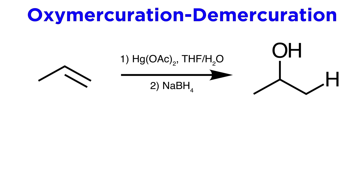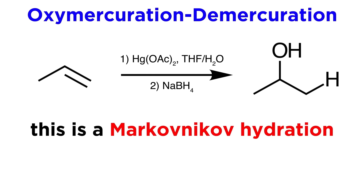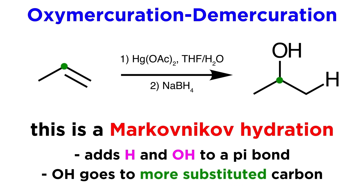Conversely, oxymercuration-demercuration yields the Markovnikov product, also in two steps. Markovnikov means that the hydroxyl ends up on the more substituted carbon, and here stereochemistry does not apply, as we will end up with two identical protons on the less substituted carbon.